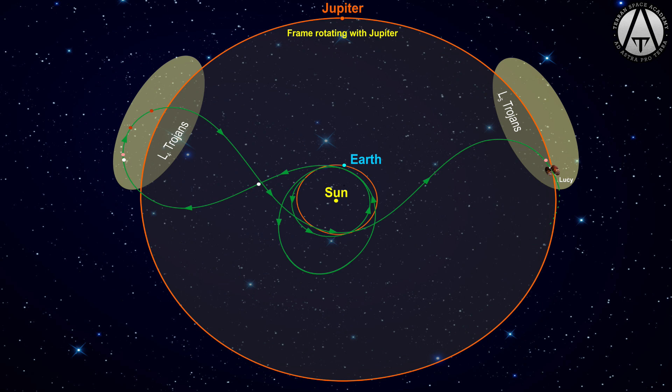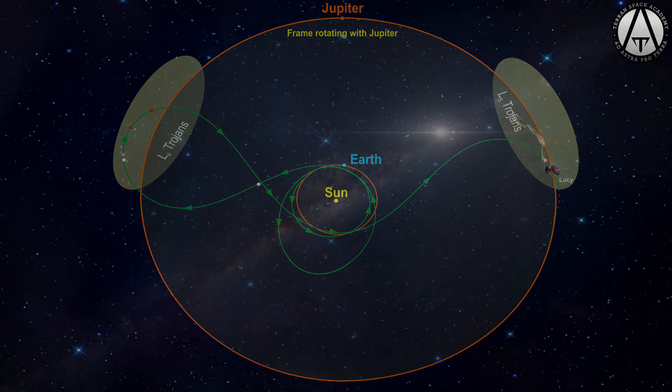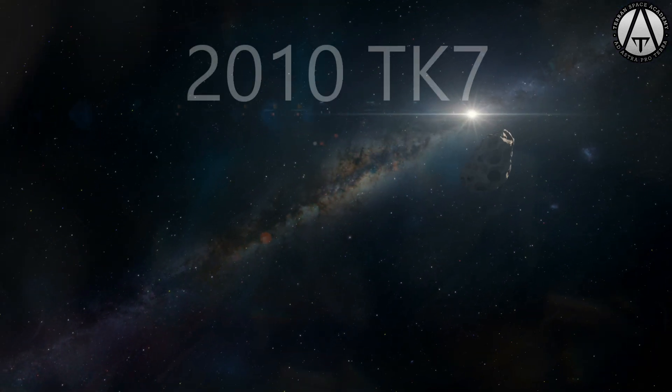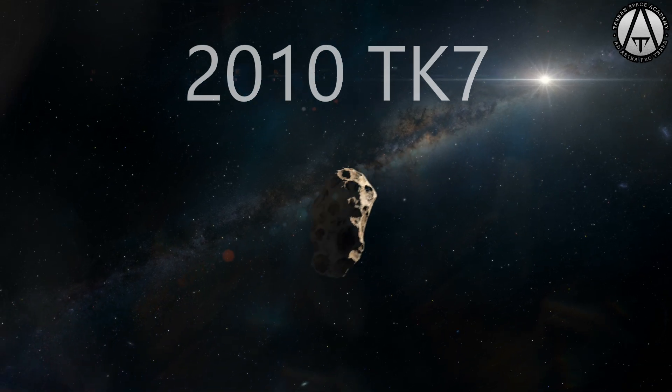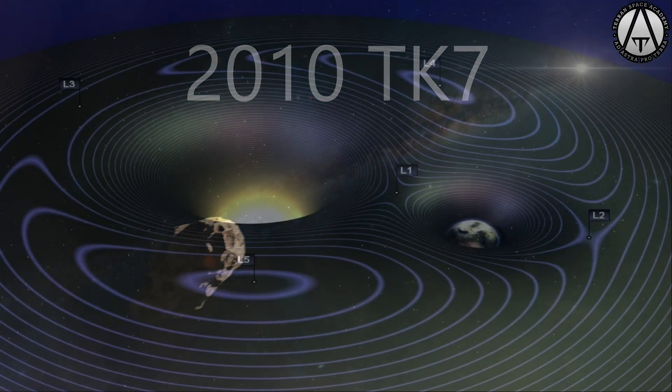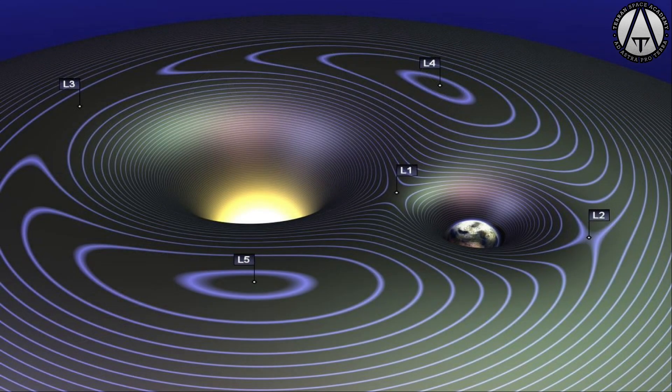Though Jupiter seems to have thousands of them, the Earth only has two identified. 2010 TK7 is a 300 meter asteroid at L4, which is the leading Lagrange point ahead of the Earth in its orbit, and 2020 XL5 is there also, and we're not quite sure of its size. These asteroids will stay in this valley unless a force is applied to remove them. We haven't found anything massive in L5 yet.